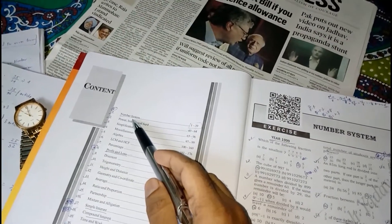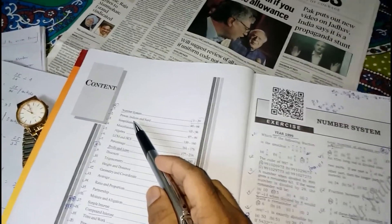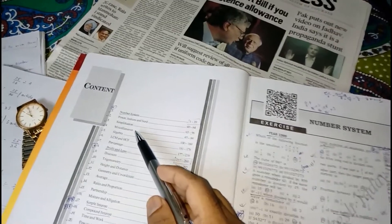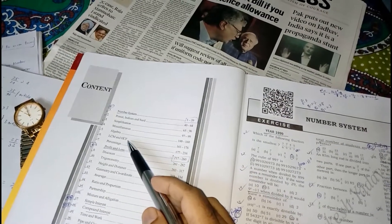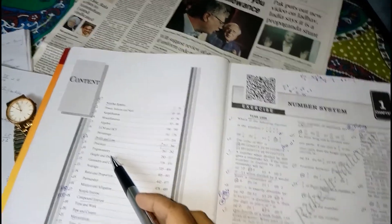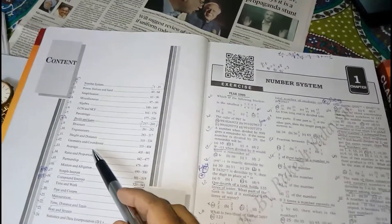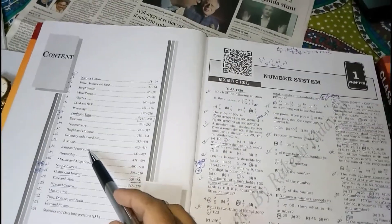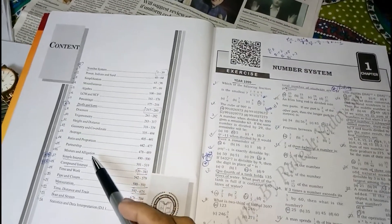Now first I want to discuss about the contents from this book. So here you can see the first chapter is number system, then the power and indices and surds, then simplification, miscellaneous algebra, then LCM and HCF, percentage, profit and loss, discount, trigonometry.